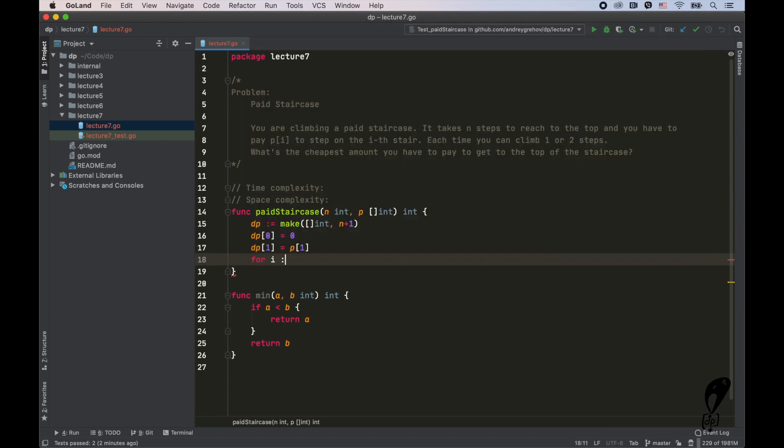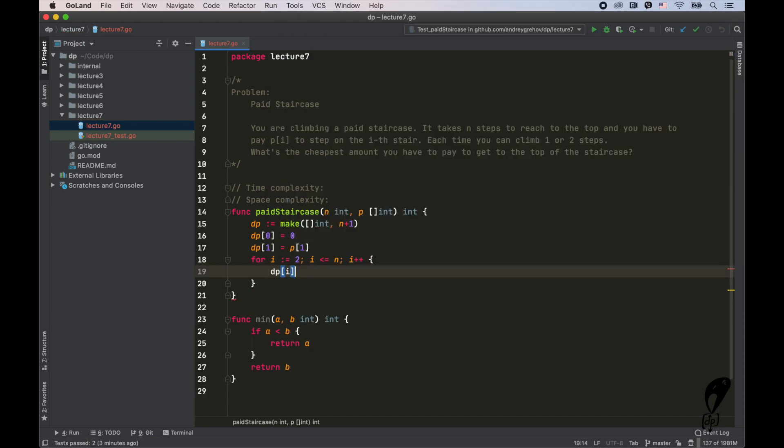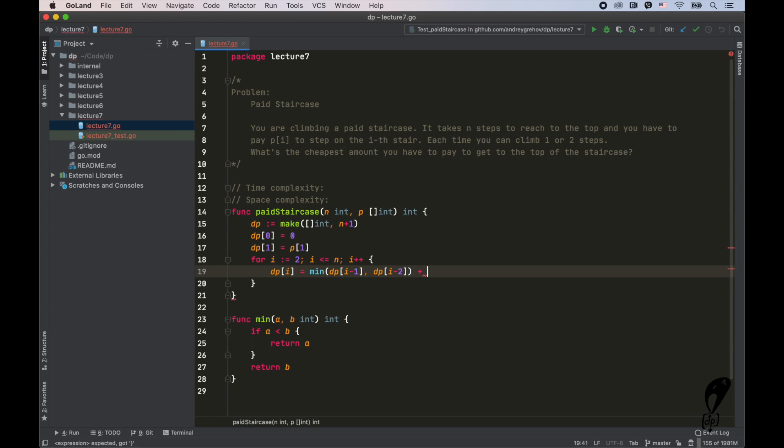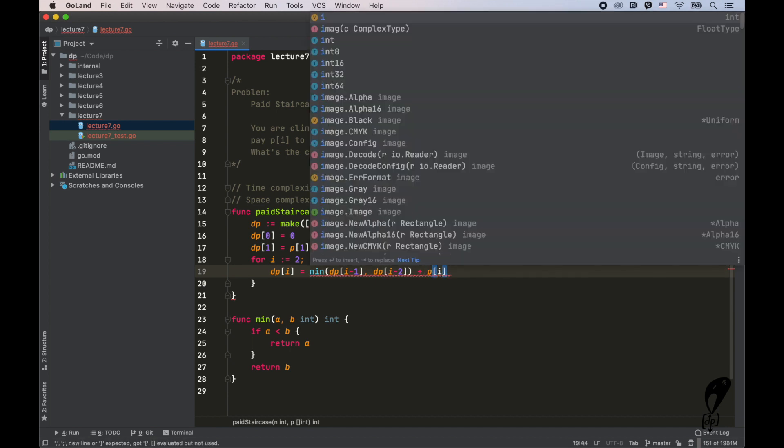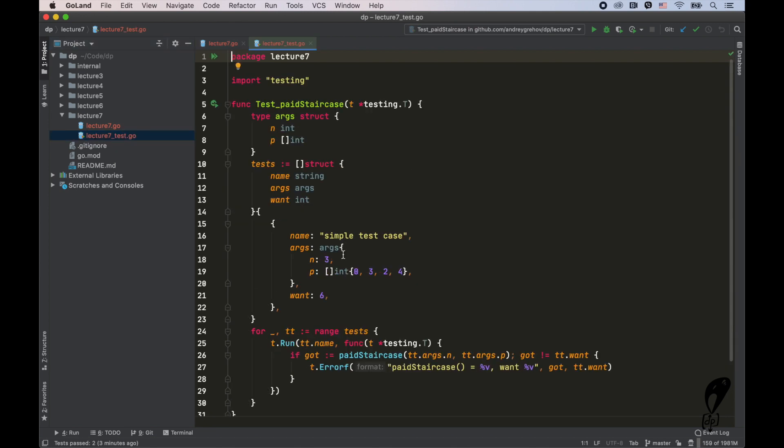And now we can apply the transition function. So we can start a loop starting from two, because we're going to use i minus one and i minus two, while i less than or equals to n i plus plus. And then dp of i equals minimum between dp of i minus one and dp of i minus two plus the price we have to pay to step on i itself, which is p of i. And the answer is going to be in dp of n. Awesome. So that's pretty much it. Let's run the test that we used on the whiteboard.